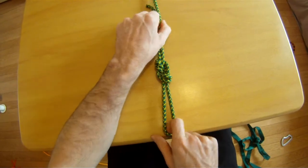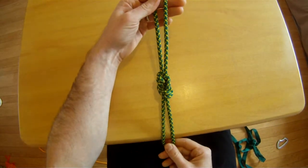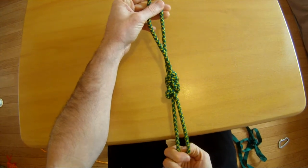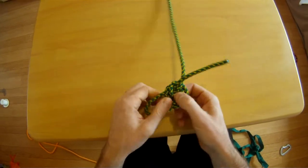It's the same as a double figure eight on a bite, but it was tied in the follow-through method. This is a very important knot for tying around something that is not clippable, such as tying into your harness or tying around a tree or something like this.